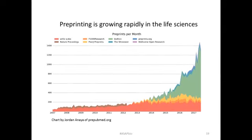Preprints in the life sciences are growing rapidly. This is a plot made by Jordan Anaya of prepubmed.org. As you can see, over the last few months especially, there's been a really rapid growth in the number of preprints per month, owing in large part to BioArchive, which is now the largest preprint server in the life sciences.